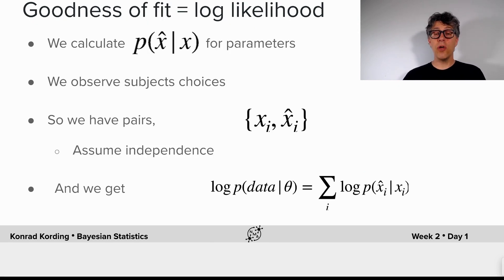So now that we can calculate the response distribution, we are back in the area where we know exactly what we should do, which is we need to calculate the goodness of fit. In this case, it can be the log likelihood. We calculate the probability of X hat given X for the parameters that we hypothesized.